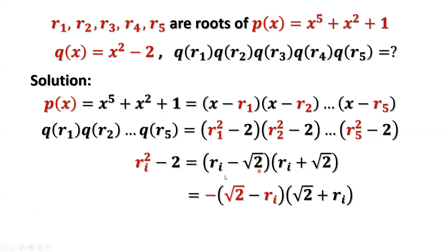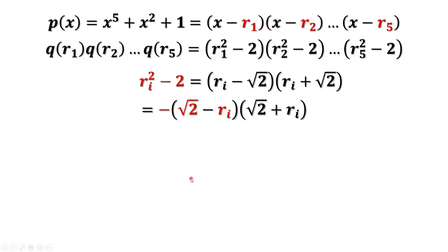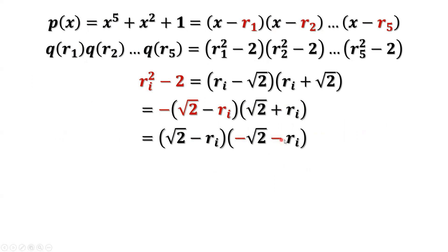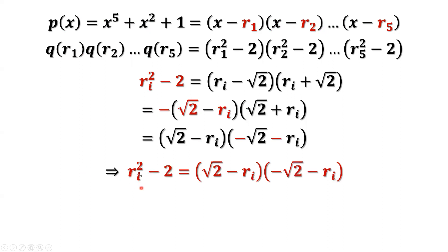We switch locations for the first term, putting square root of two first, giving a negative sign outside. We distribute this negative sign to the second term, yielding negative square root of two minus R_i. So R_i squared minus 2 equals square root of two minus R_i, times negative square root of two minus R_i.